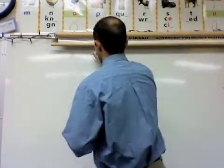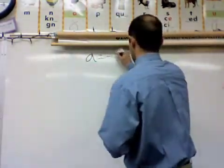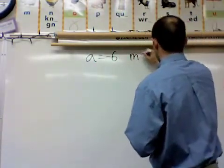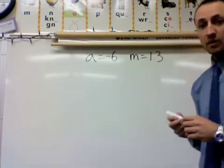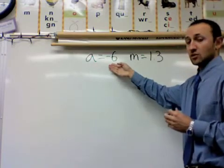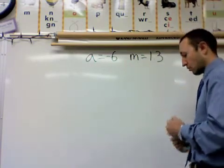we will say that A is going to be equal to negative 6 and M will be equal to 1.3. So whenever we have an expression with either the letter A, we're going to replace it with a negative 6. If our expression has M, we're going to replace it with 1.3.